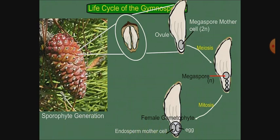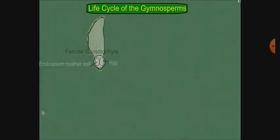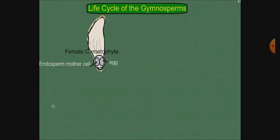Now comes the fertilization process. We saw that the male gametophyte produced pollen, and the female gametophyte has become the egg. The pollen grains come directly to the egg and release their male nucleus — the male nucleus means sperm. The pollen grain comes to fertilization, and after fertilization it becomes a zygote.